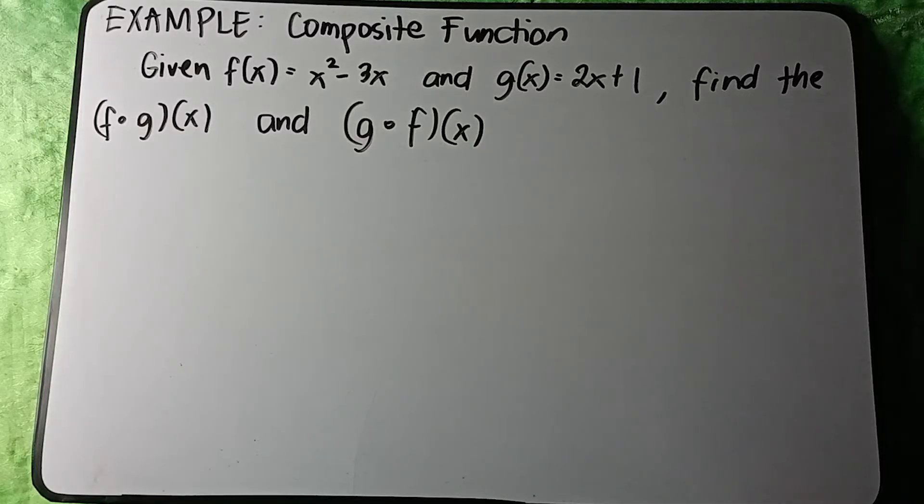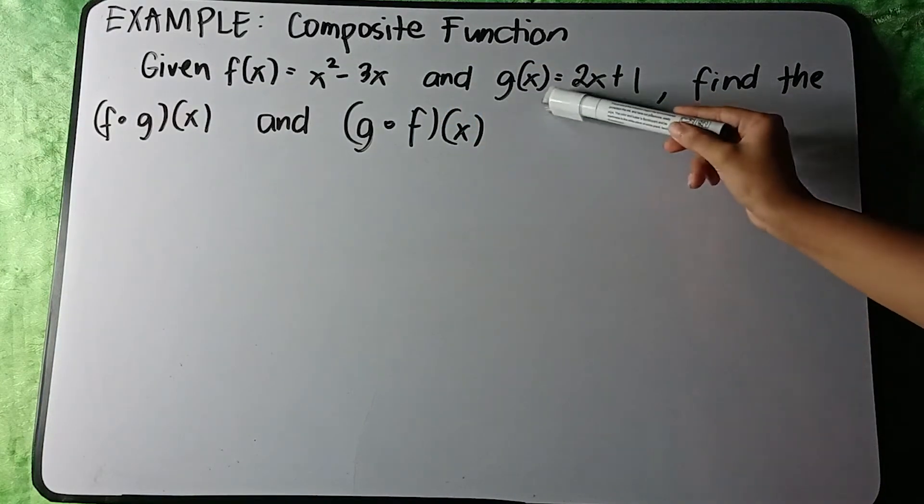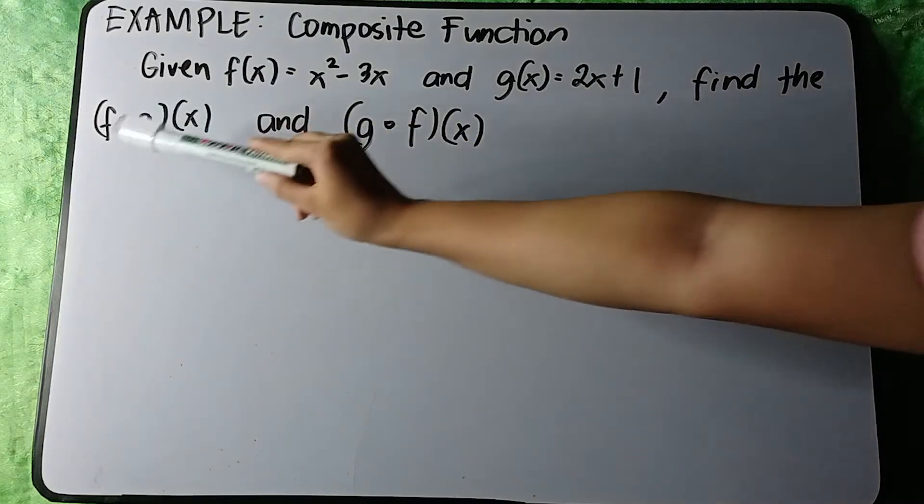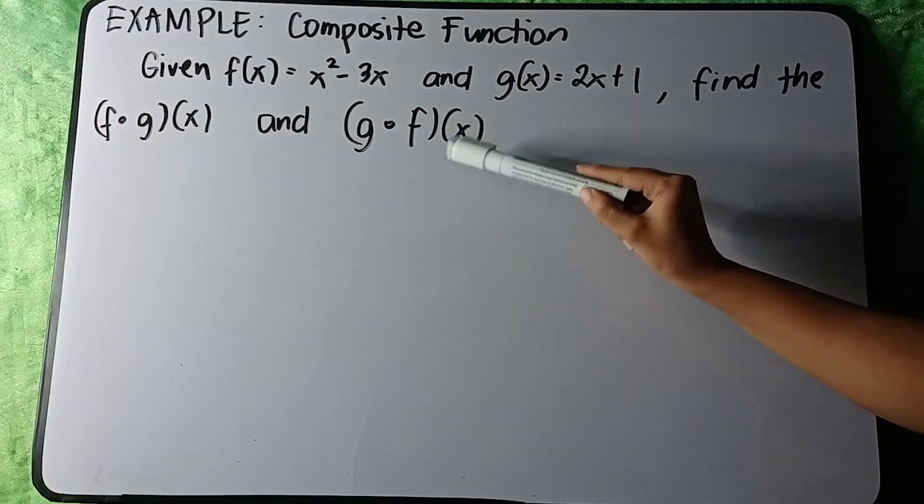Let us solve an example for composite function. Given f(x) = x² - 3x and g(x) = 2x + 1, find f(g(x)) and g(f(x)).